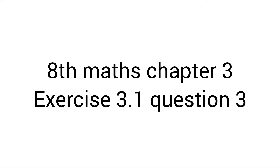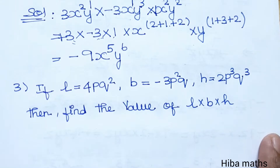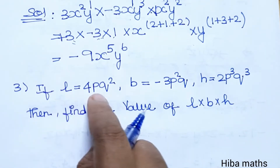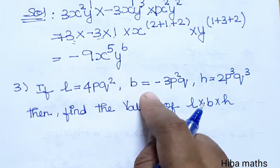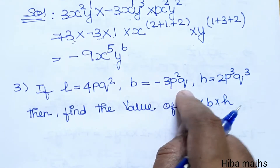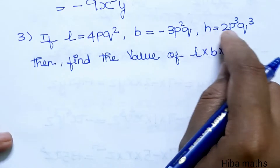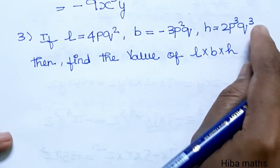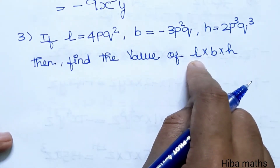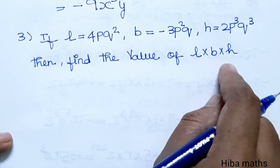Hello students, welcome to Hibamax 8th Standard Max Chapter 3, Exercise 3.1. The third question is: if L is equal to 4PQ squared, B is equal to minus 3P squared Q, H is equal to 2P cubed Q cubed, then find the value of L into B into H.